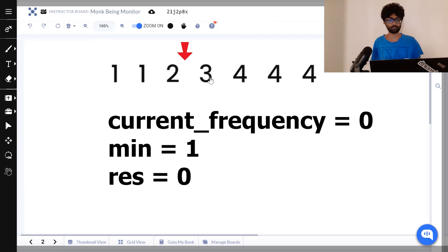We move on to 3. 3's frequency is 1. 1 minus 1 is 0. Our result remains unchanged and we move on.